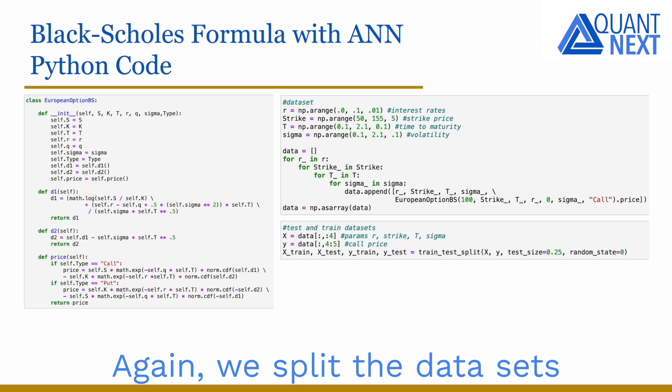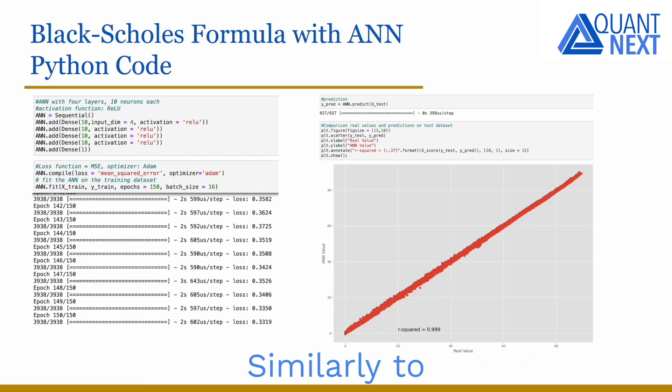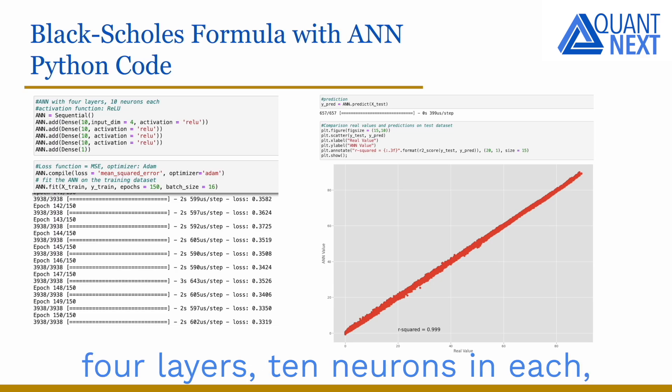Again, we split the dataset between training and test. Similarly to what we have done before, we create and we fit the neural network on the training dataset. We use, again, a neural network with 4 layers, 10 neurons in each, the input dimension is now 4.